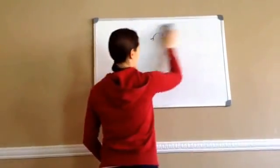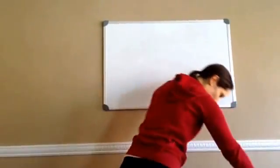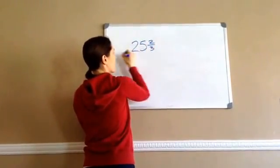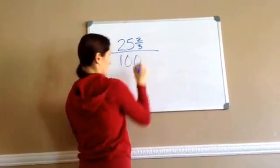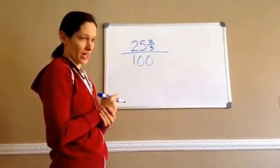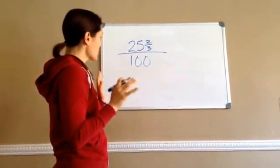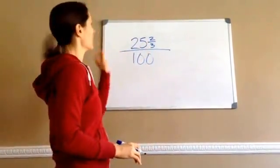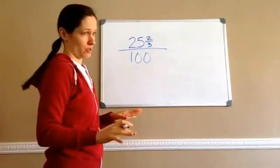All right, now let's look at this one. This one may look a little weird. 25 and 2 thirds all over 100. That's our complex fraction we're looking at. Now what I would suggest you doing in order to work this problem is you're going to find the improper fraction,